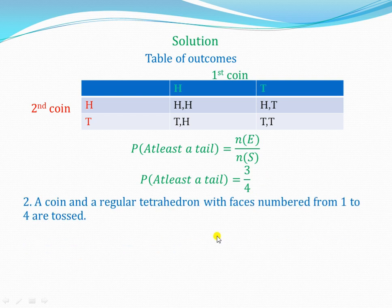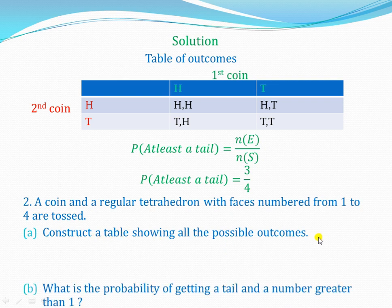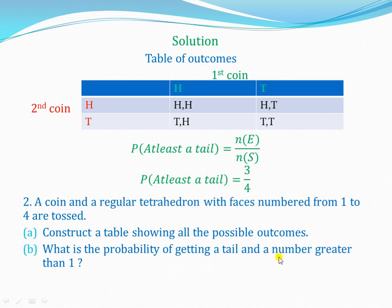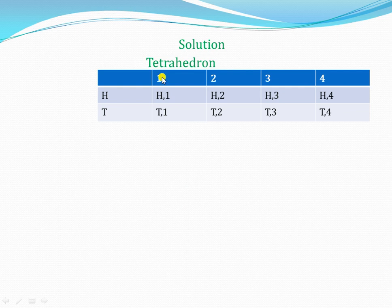Let's move on to question 2. A coin and a regular tetrahedron with faces numbered 1 to 4 are tossed. Part A: construct a table showing all possible outcomes. Part B: what is the probability of getting a tail and a number greater than 1? A tetrahedron has 4 faces: 1, 2, 3, and 4. For a coin, we have a head and a tail.